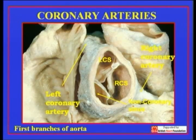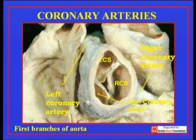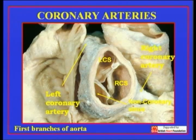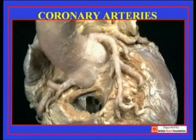The third sinus, inferiorly and posteriorly, is the non-coronary aortic sinus. It is as rare as hen's teeth to find coronary arteries arising from this non-adjacent aortic sinus. In my entire career, I've only ever seen one heart in which a coronary artery arose from this particular sinus.